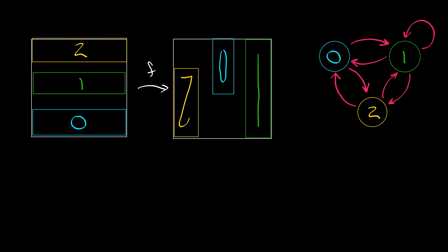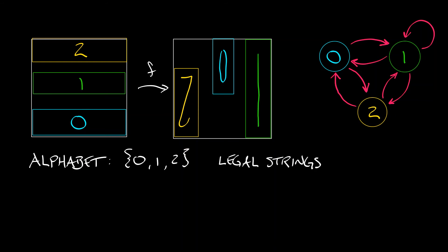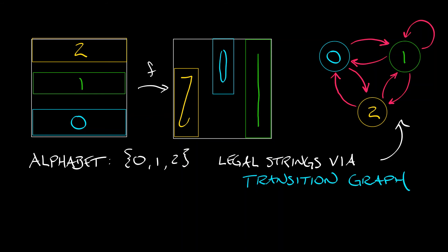Together, this directed graph gives me a deterministic finite automaton. I've set an alphabet of three symbols — zero, one, two — and this directed transition graph tells me about legal strings: symbol sequences that are permissible and that build up the space capital Sigma. Capital Sigma is a language determined by this DFA.